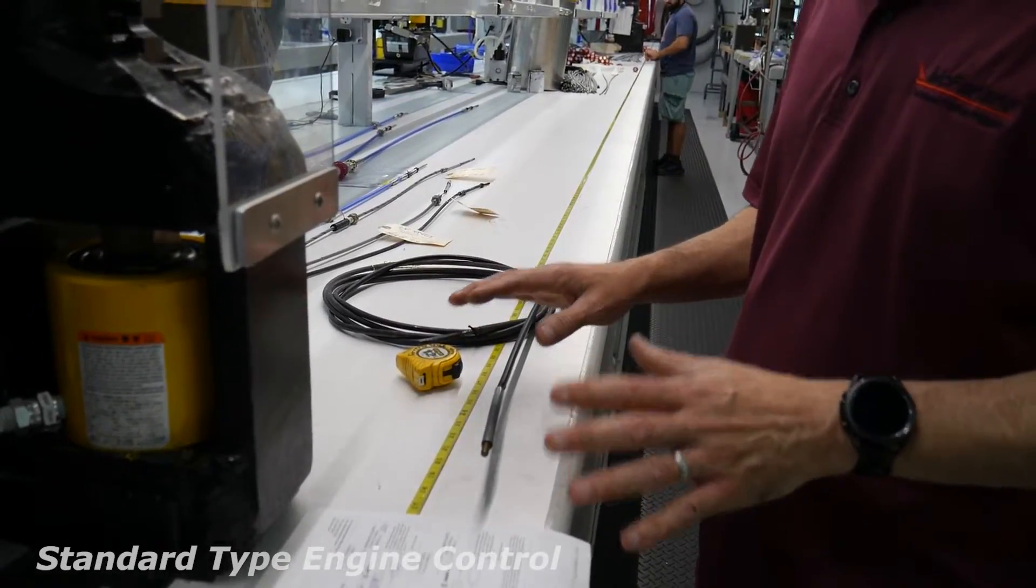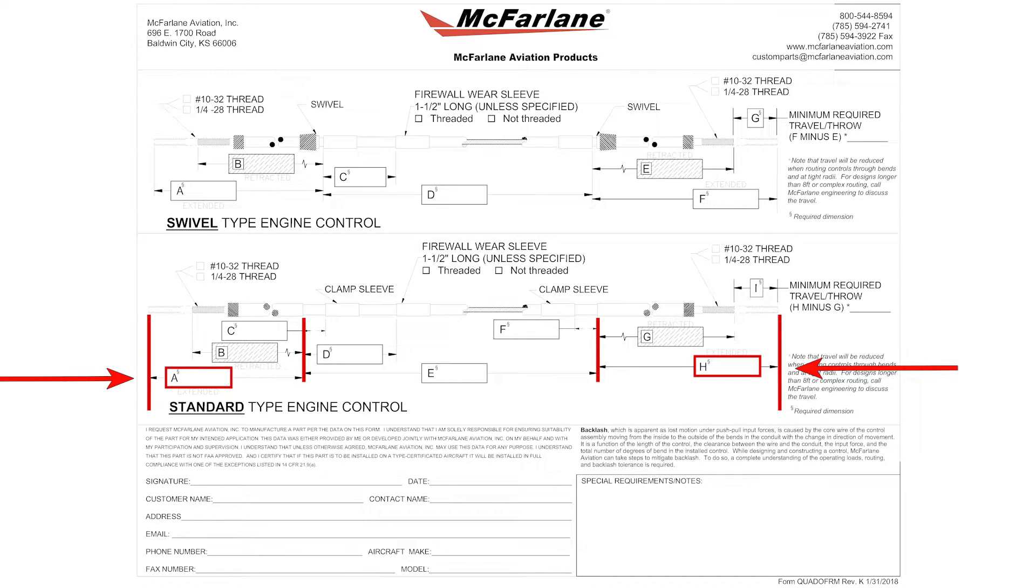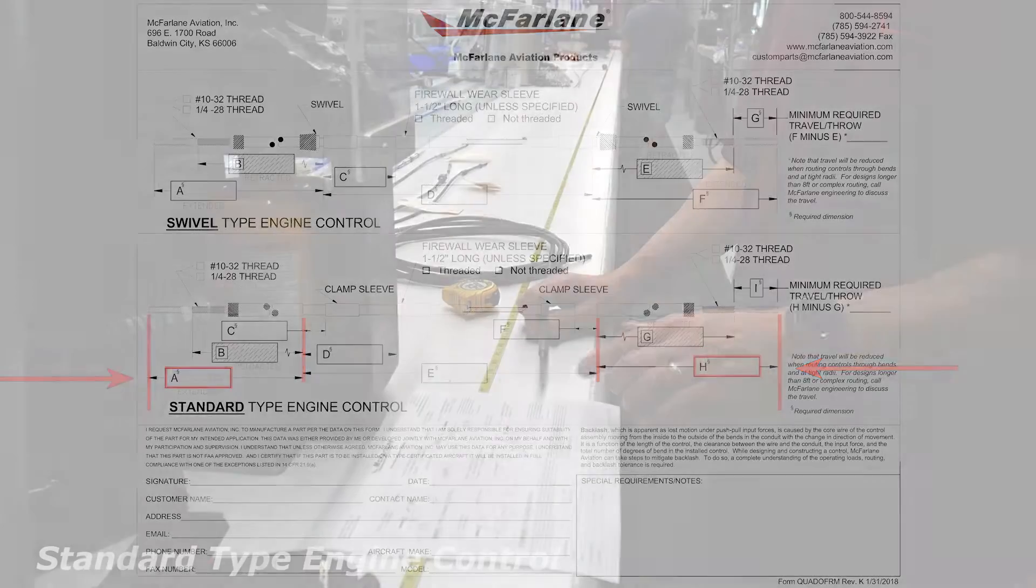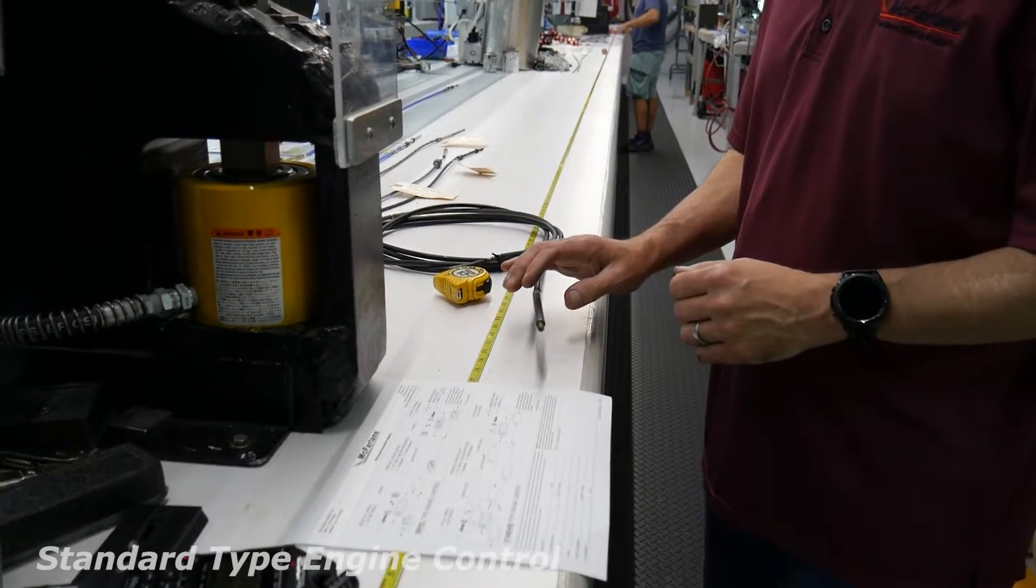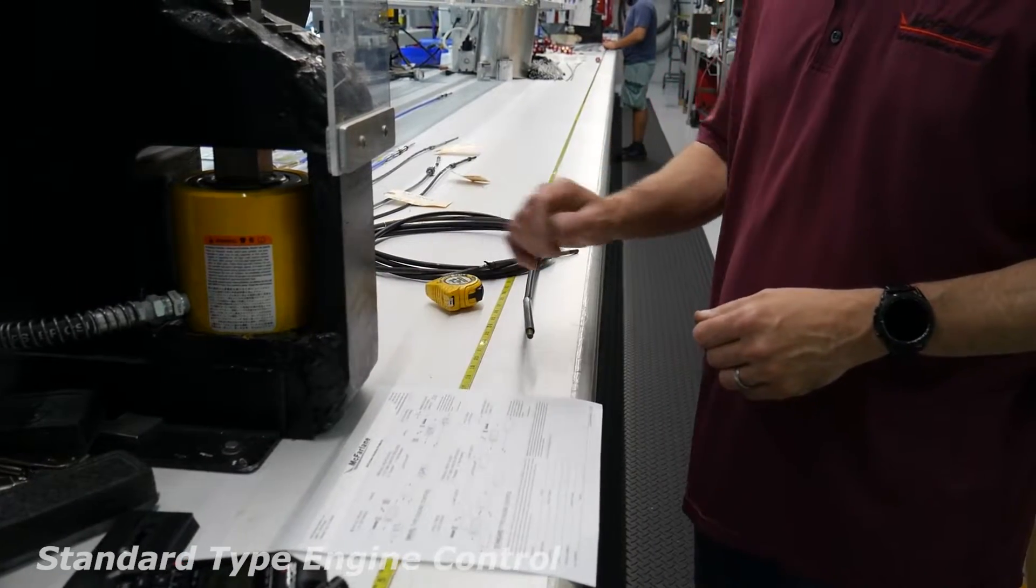And then the same would go for A and H in this case. Extend it out, measure it, retract it, measure it, same as the top, and then subtract one from the other, you get your travel.